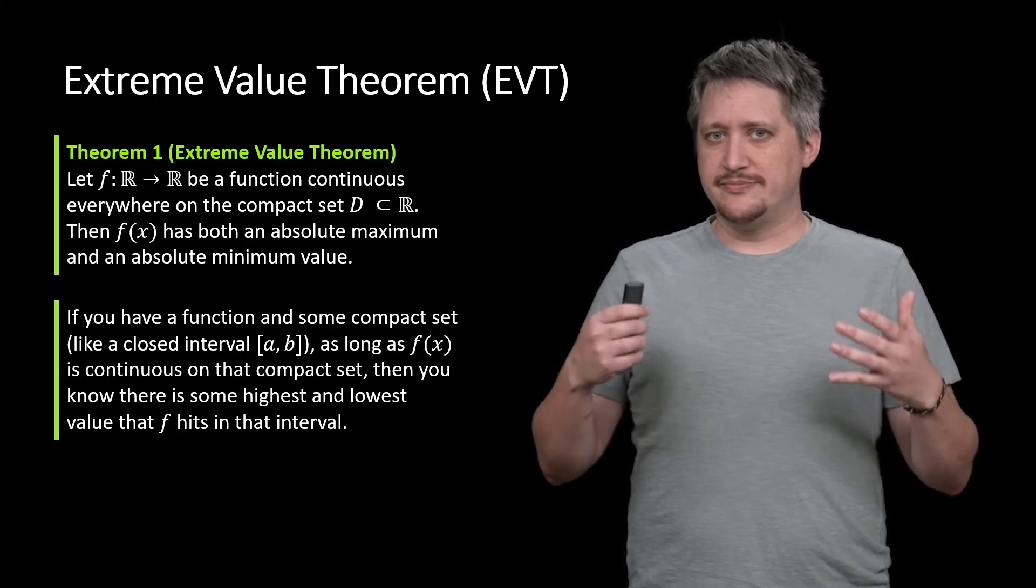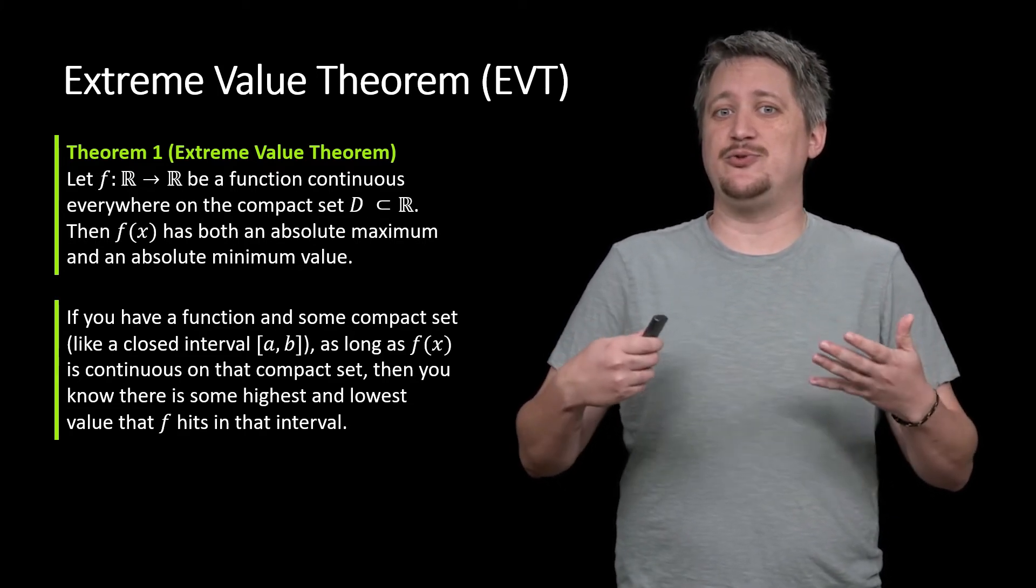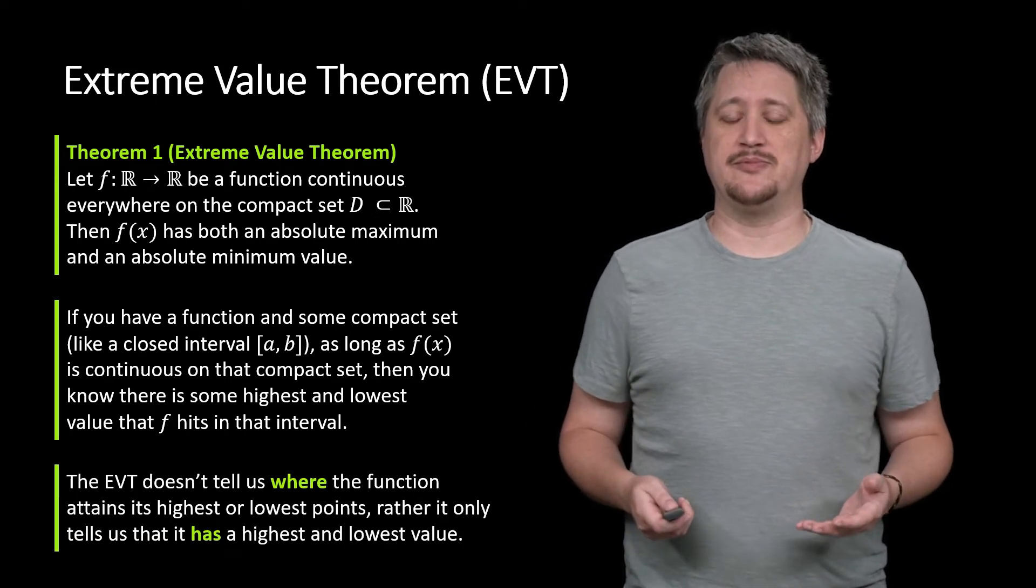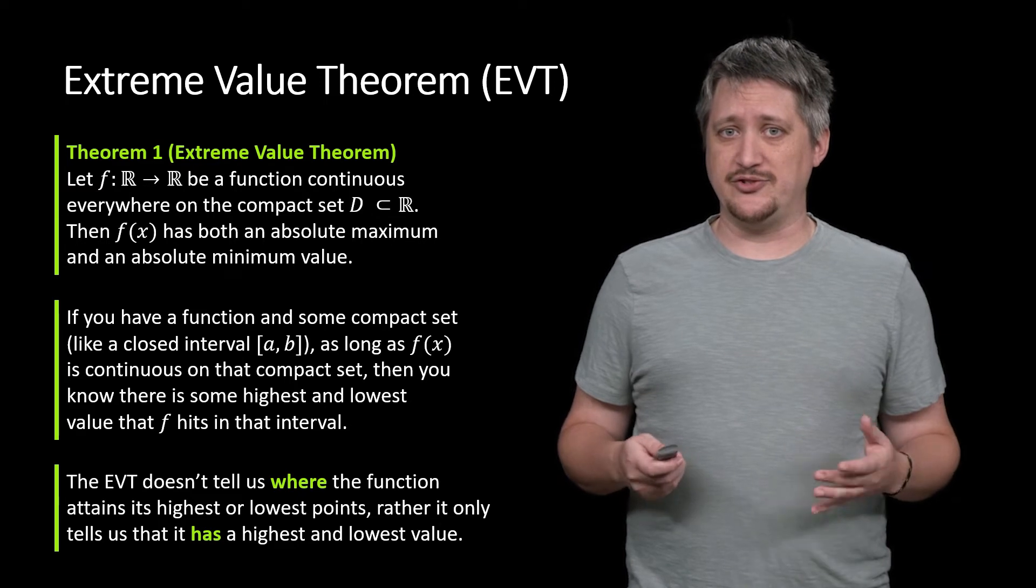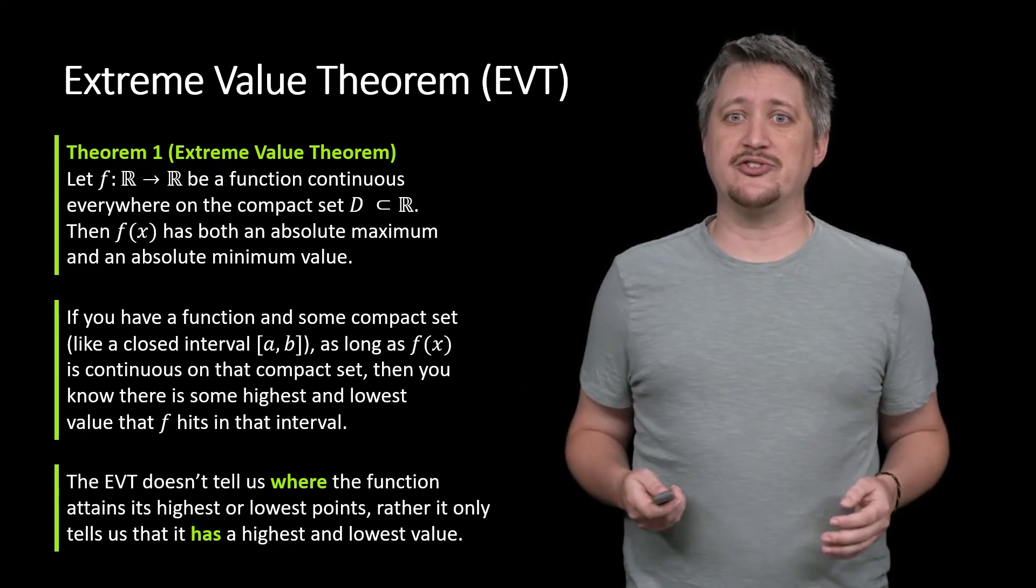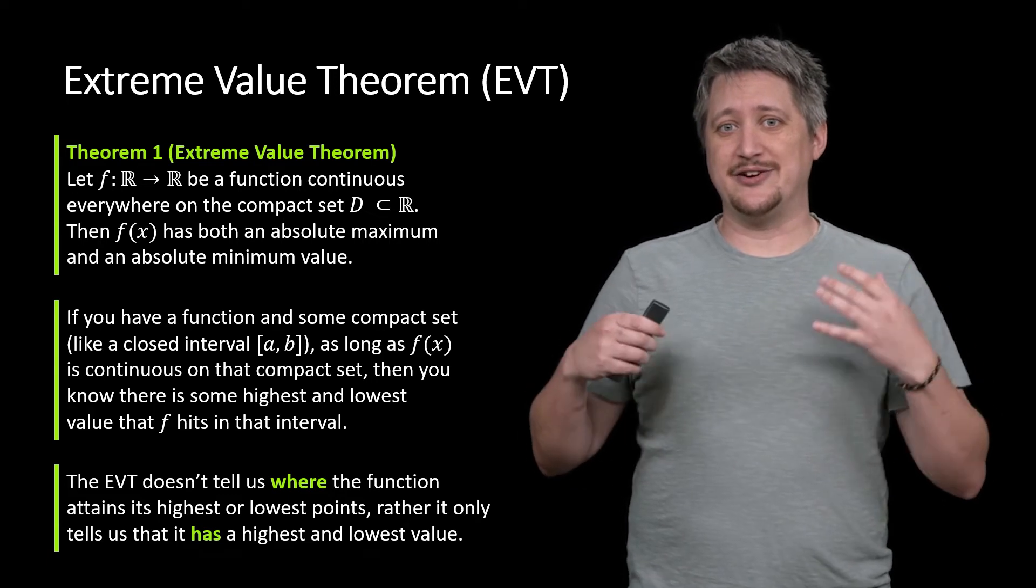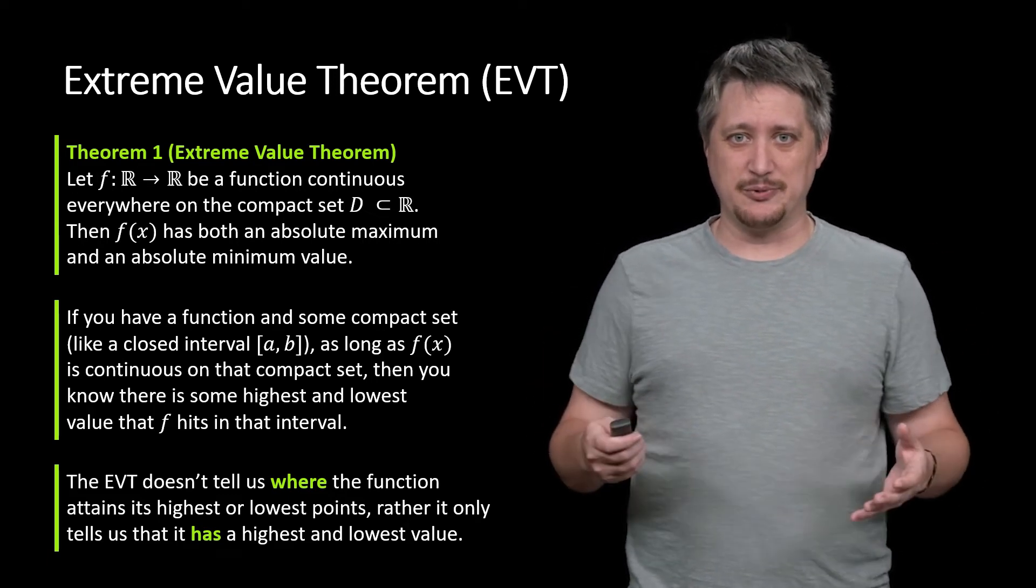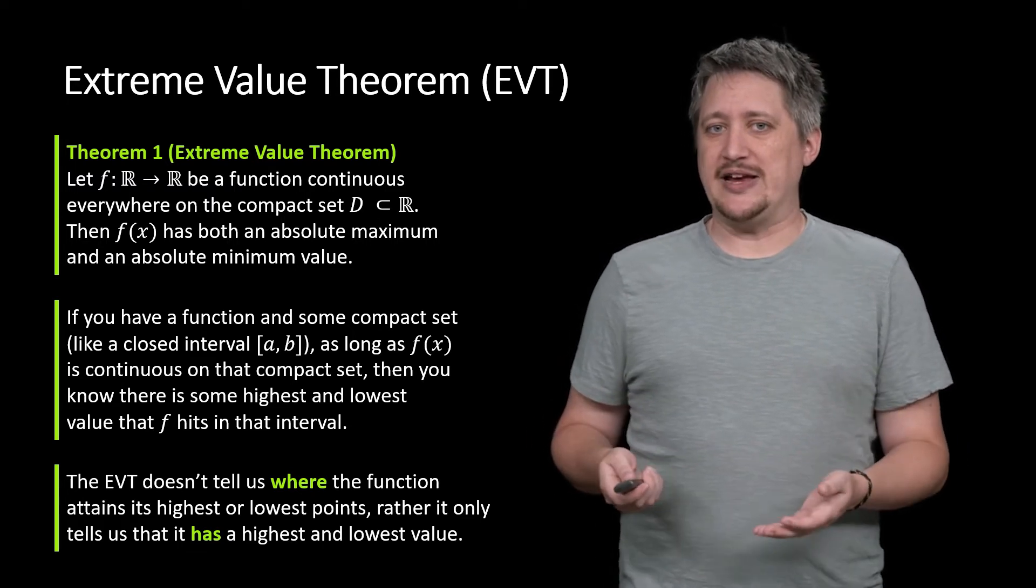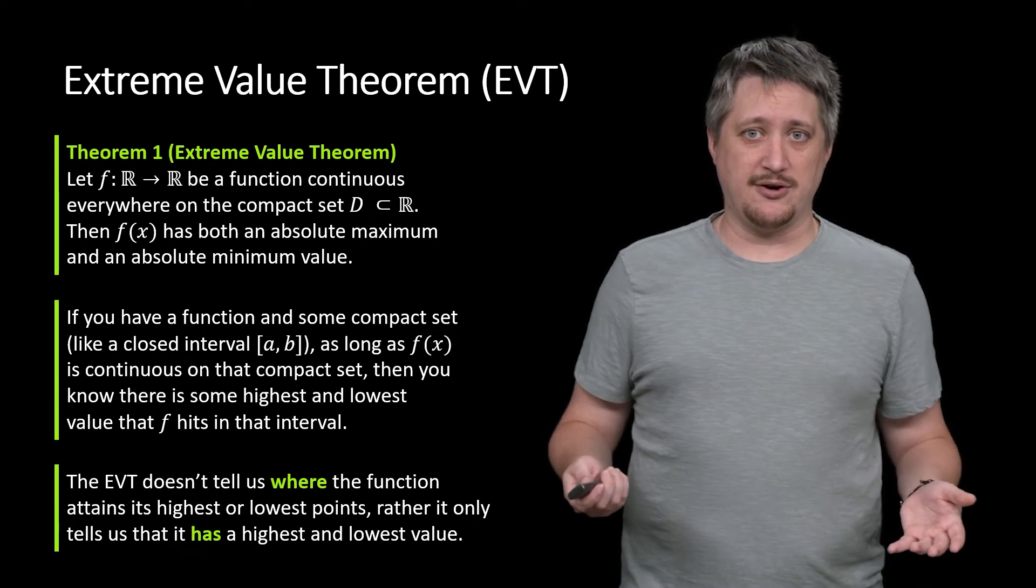But be careful about what you're hearing here. All I'm saying is it has to have a maximum and minimum. In particular, EVT doesn't tell us where that maximum or minimum is, just that it is somewhere. Just like the intermediate value theorem told us that there is a place that it hits that intermediate value, but it didn't tell us where it is, EVT works the same way. It tells us that these points exist, but not where they are.